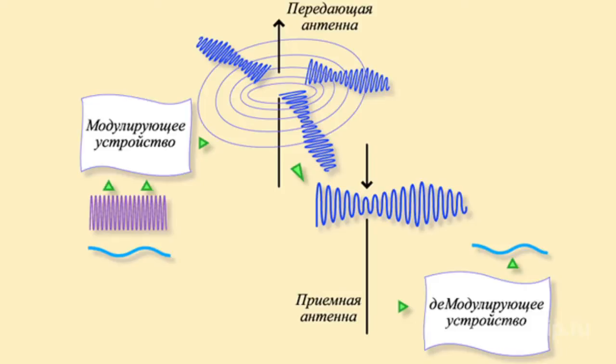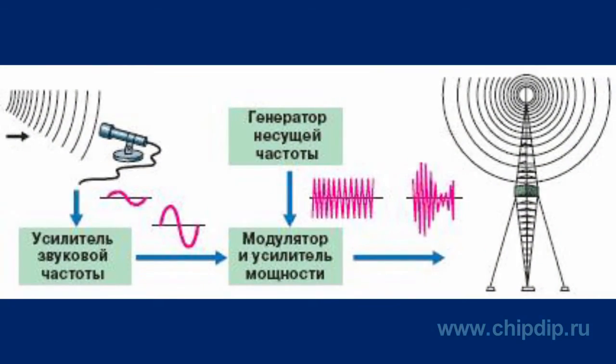The radio waves travel freely to the pickup antenna and cause electric oscillations which go further to the radio receiver.